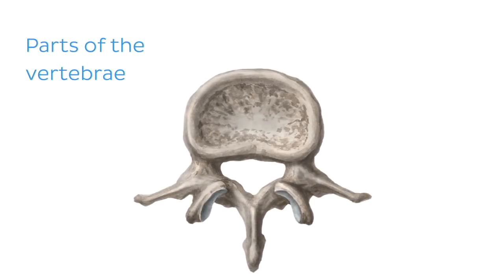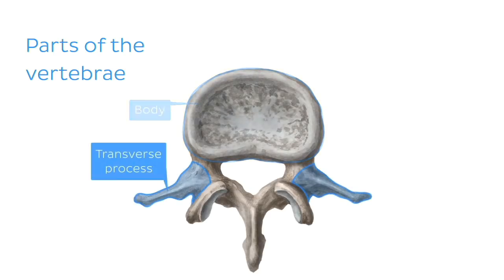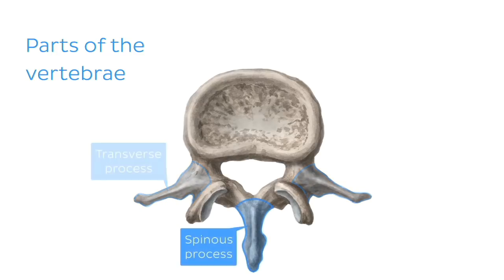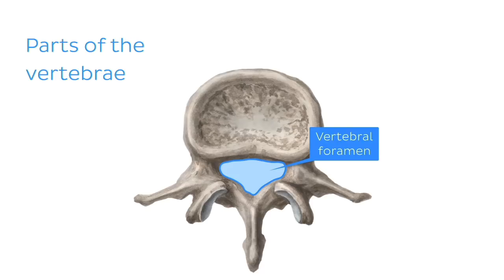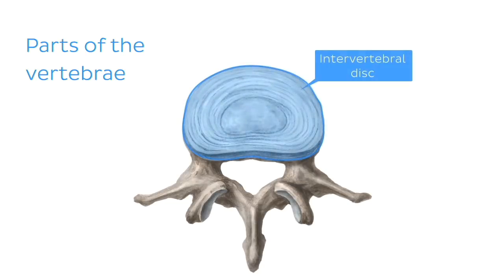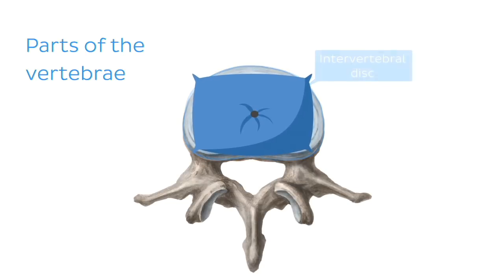First, let's briefly look at some of the key features of the vertebrae in order to have a general idea where the veins of the vertebrae are located. A single vertebra can be divided mainly into the body, the transverse process, and the spinous process, where the spinous process faces posteriorly. The vertebral foramen in the middle forms the vertebral canal through which the spinal cord passes, and each vertebra is supported by a cartilaginous intervertebral disc which acts like a cushion to absorb any mechanical stress exerted onto the vertebral column.